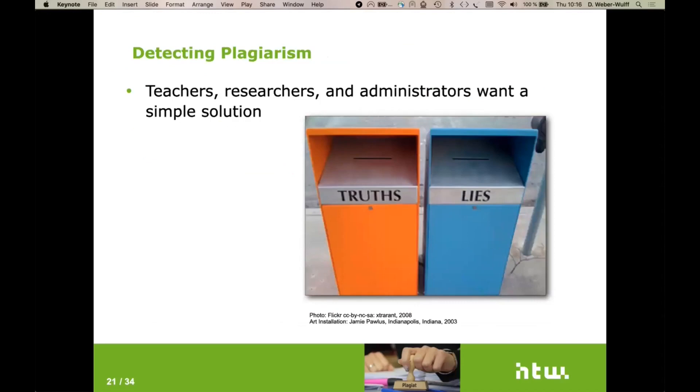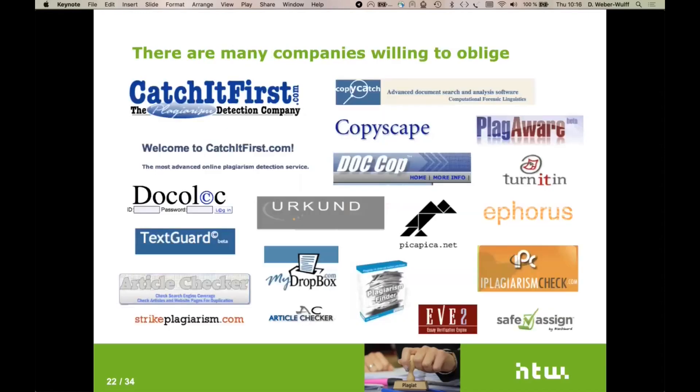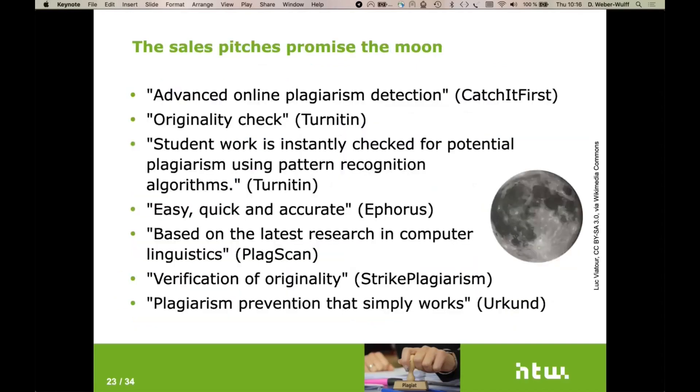A long definition of plagiarism, and I hope to show you that it's very wide. We'd like to detect plagiarism and of course, everybody would love to have some sort of litmus test, right? You put the thesis in and it comes out either orange or blue, so that you know whether it's a plagiarism or not. And unsurprisingly, there are many, many companies out there that are very willing to oblige you. And their departments of sales have these wonderful sayings: advanced online plagiarism detection. Turnitin says that they're doing a check for originality, which they can't actually do, because you can never prove that anything is original.